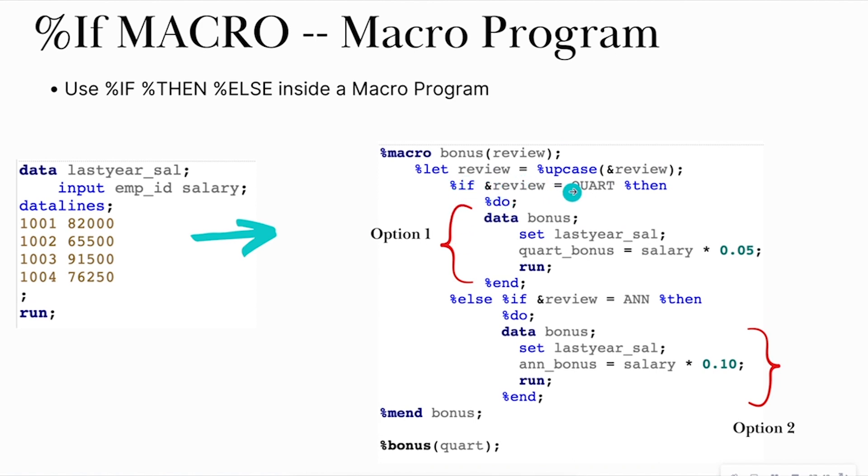And then I'm going to say, let my review be upcase of ampersand review. Because ampersand review is going to be that macro variable there. And I'm going to do my if logic here. So if the review is equal to QRTR, then do. Because remember, we do the percent then do. This is not a do loop. It's more of a do multiple things. It's not going to keep cycling. It's just going to say, do this. So in this case, I want to create a data set called bonus. And I want to assign a new variable called QRTR bonus as 5% of the salary. If I put QRTR inside this parentheses. Else, if I want to go ahead and put AN inside of the parentheses, which stands for annual review, then the data set that I'm going to get out is now going to have annual bonus equals to 10% of the salary. And so, of course, when I do a macro program, I end it with that percent mend statement as well. And I can execute it by calling percent bonus and putting QRTR or AN in there. It's going to automatically force it to uppercase with this second line. So let's actually see this in SAS Studio.